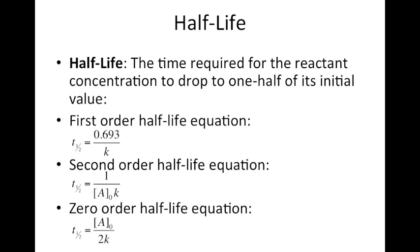The time that it takes to reduce the concentration by half is dependent on the overall order of a reaction. We have three different half-life equations. For an overall first-order reaction, the half-life is equal to 0.693 divided by the rate constant K. For a second-order reaction, the half-life is equal to one over the initial concentration times the rate constant. For a zero-order reaction, the half-life is equal to the initial concentration divided by two times the rate constant.